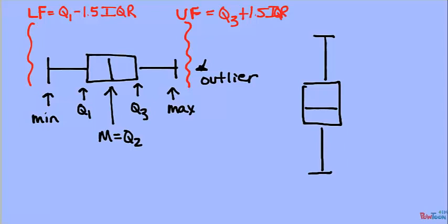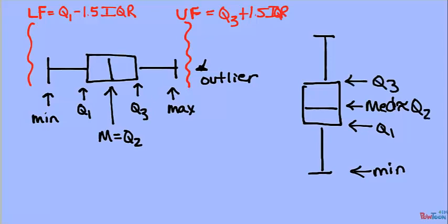The vertical box plot goes min, Q1, median, also known as Q2, Q3, and max. Remember to check those upper and lower fences to see if there are outliers.